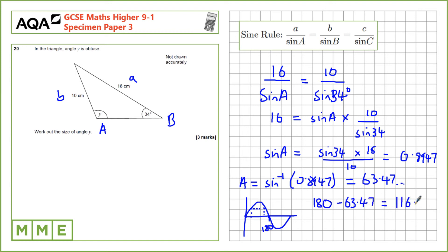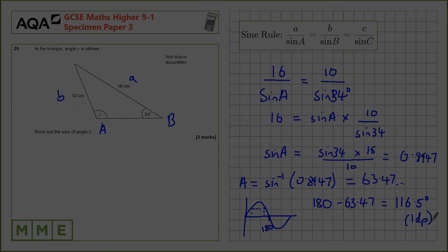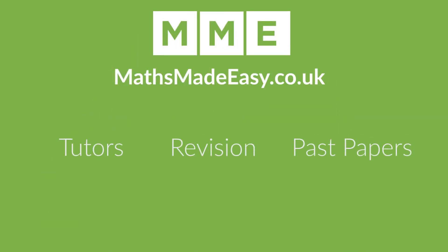This gives us an angle of 116.5 degrees to one decimal place.